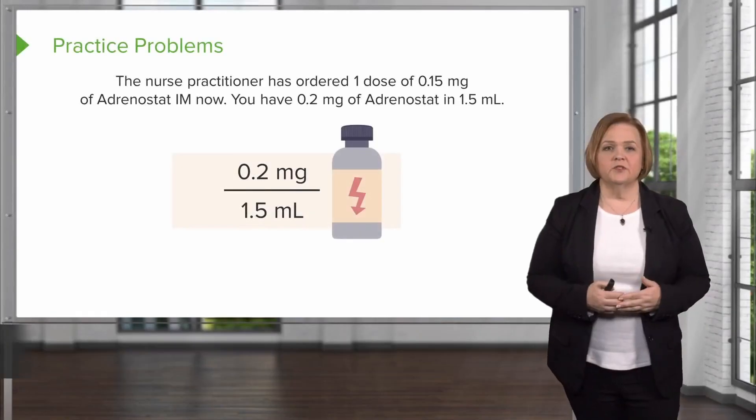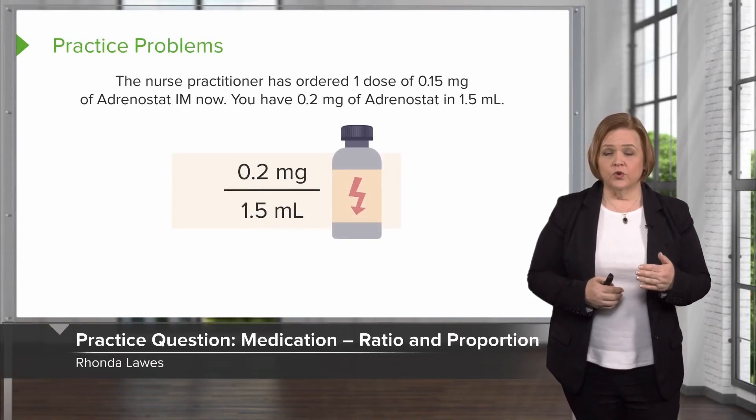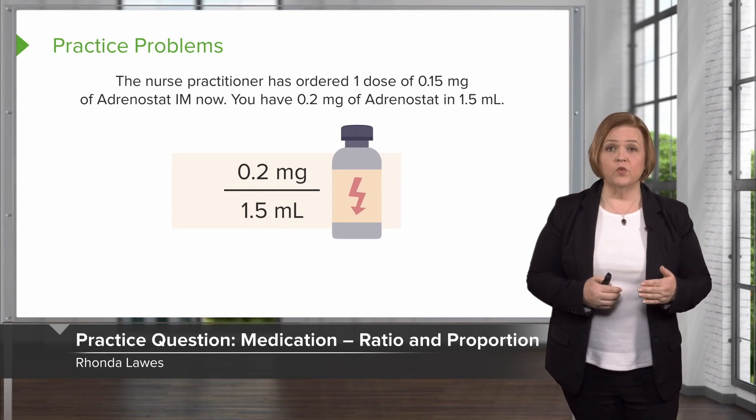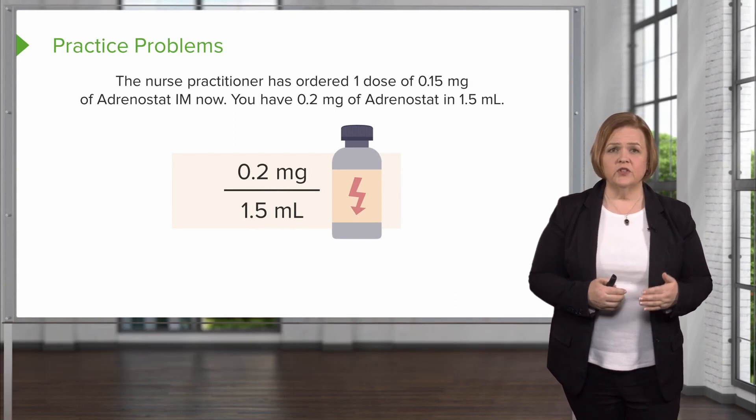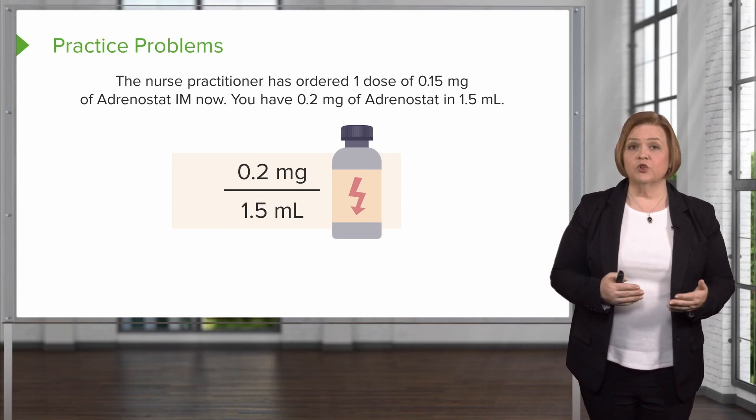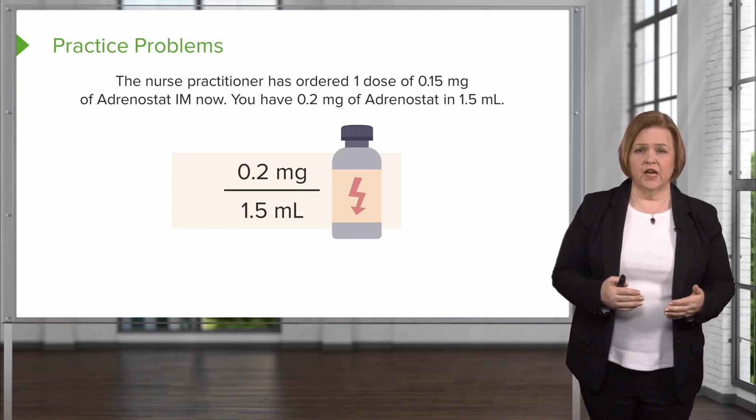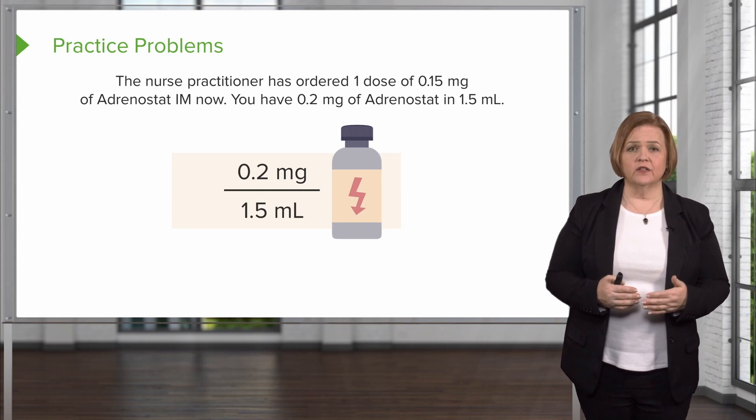So let's try some practice problems. The nurse practitioner has ordered one dose of 0.15 milligrams of adrenostat IM now. You have 0.2 milligrams of adrenostat in one and a half milliliters.